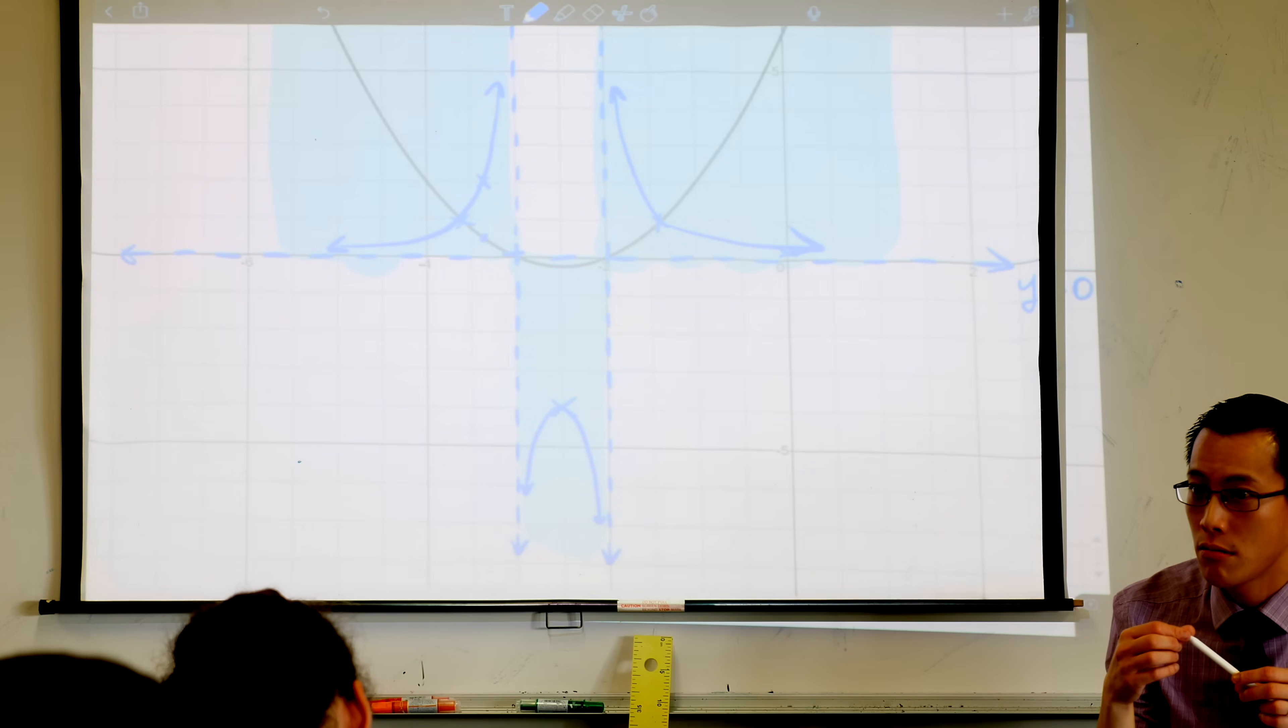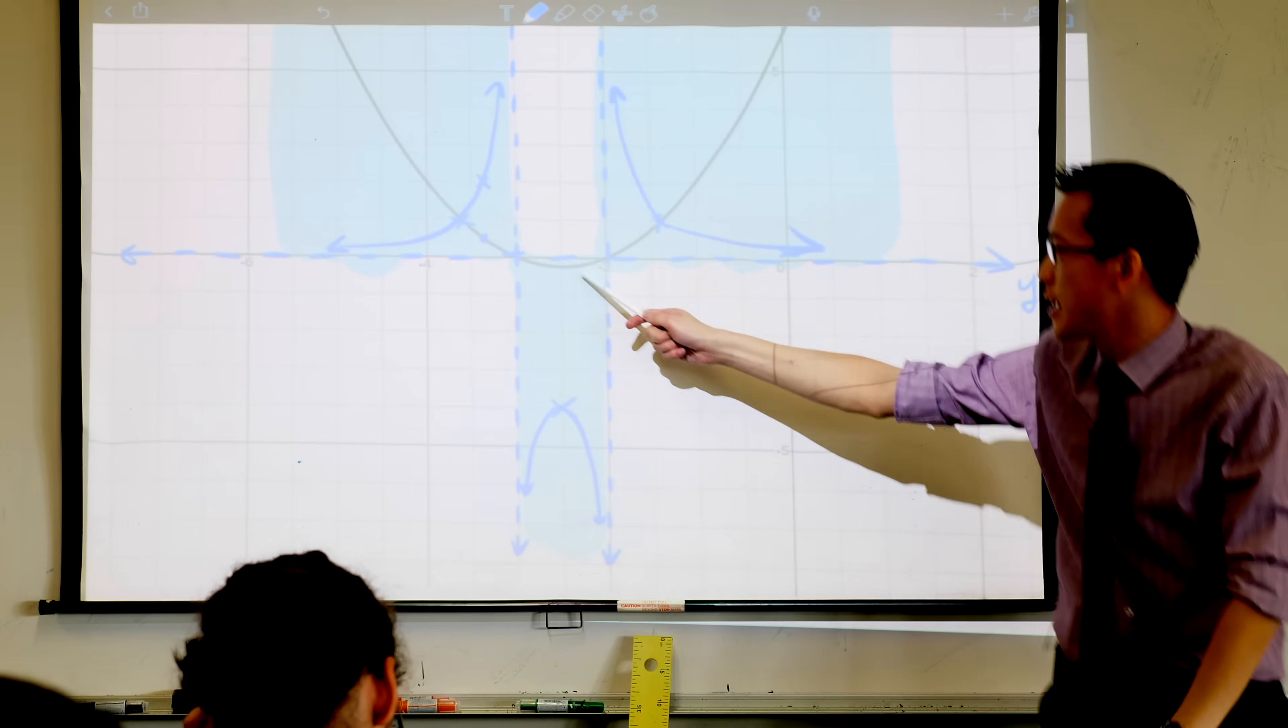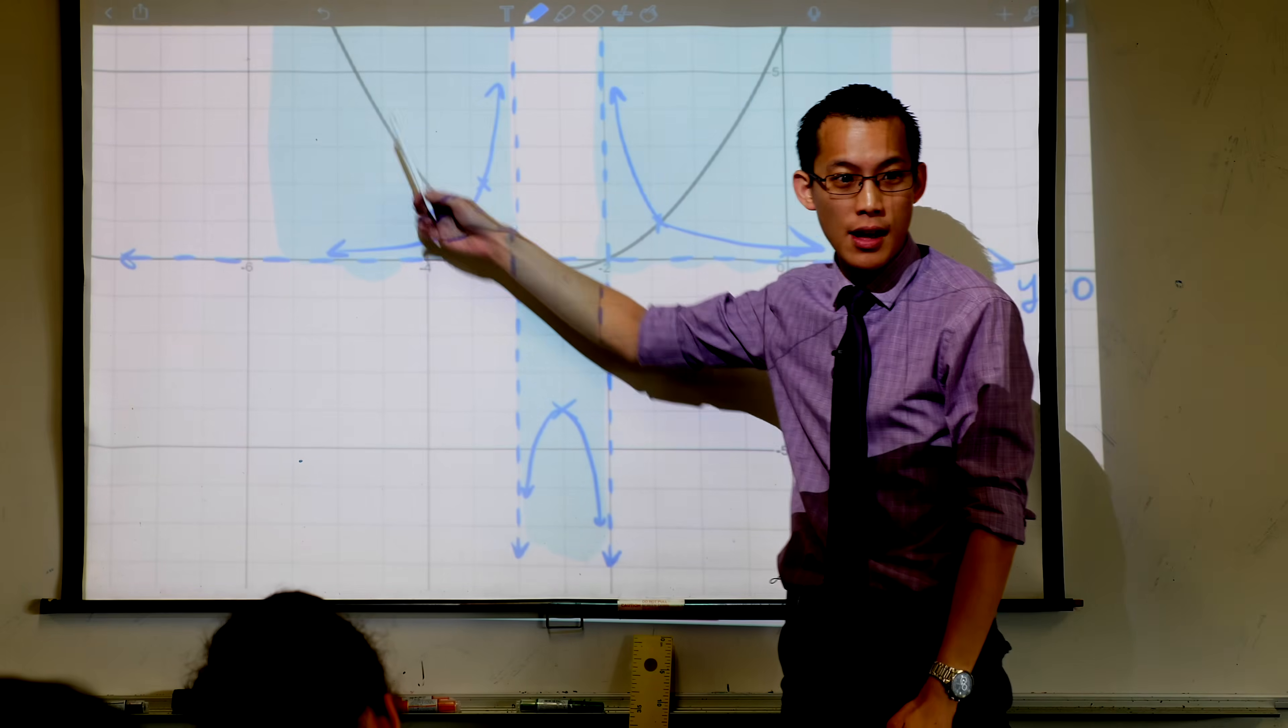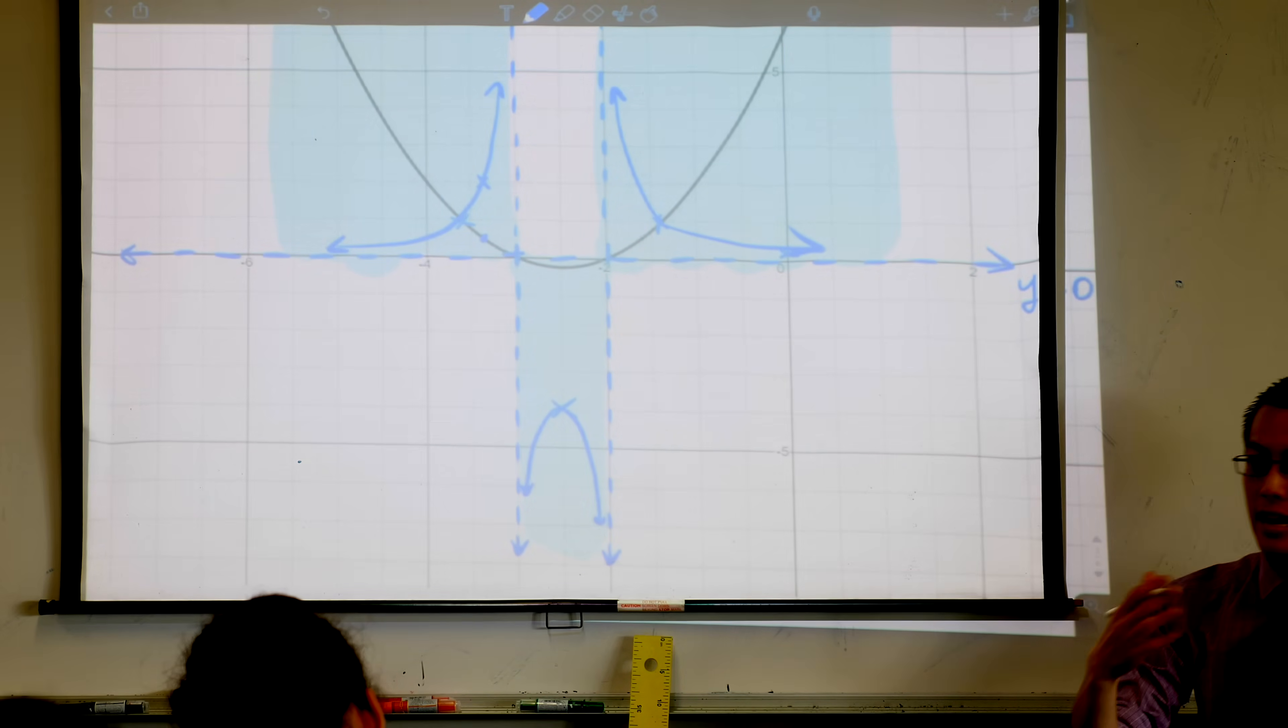Look at the reciprocal, the blue graph. Do you notice it also has symmetry? That shouldn't surprise us because if you take the reciprocal of things over here and they're exactly the same as the values over here, then symmetry like this in the original gives you symmetry in the reciprocal.